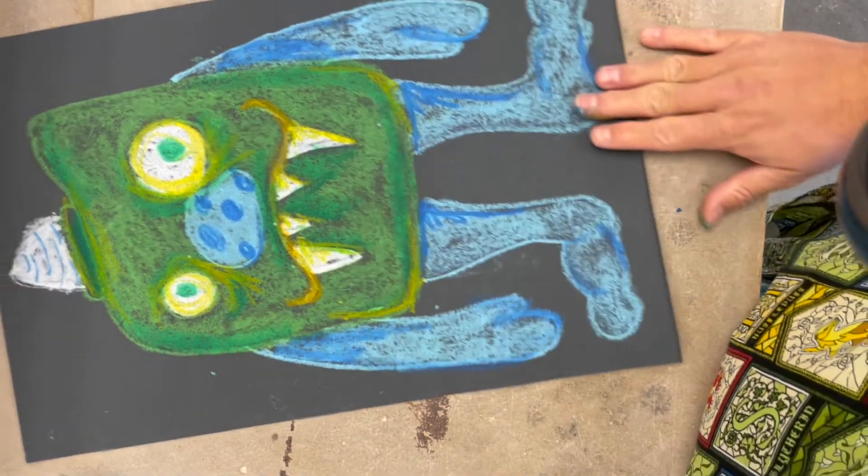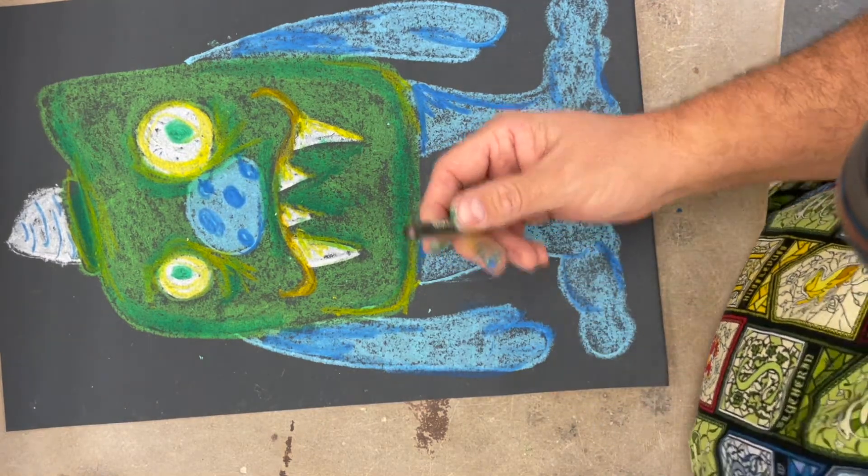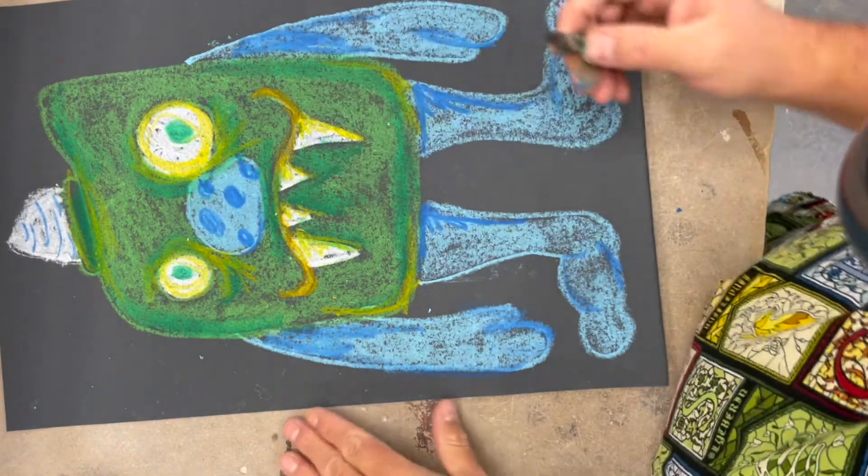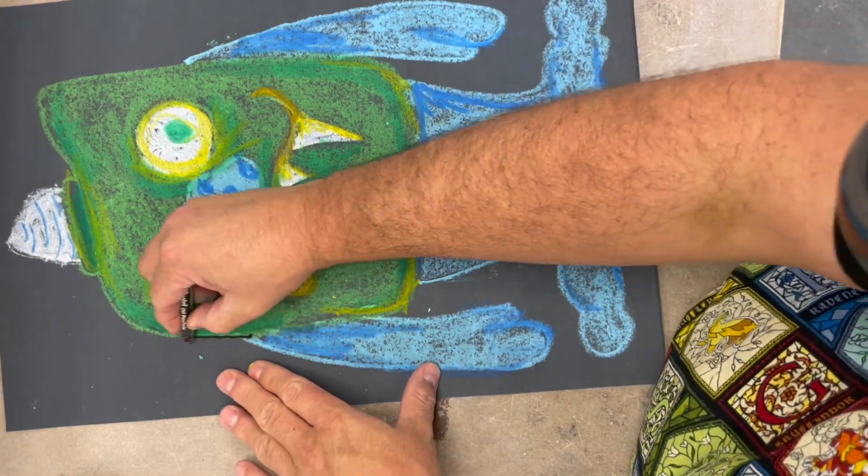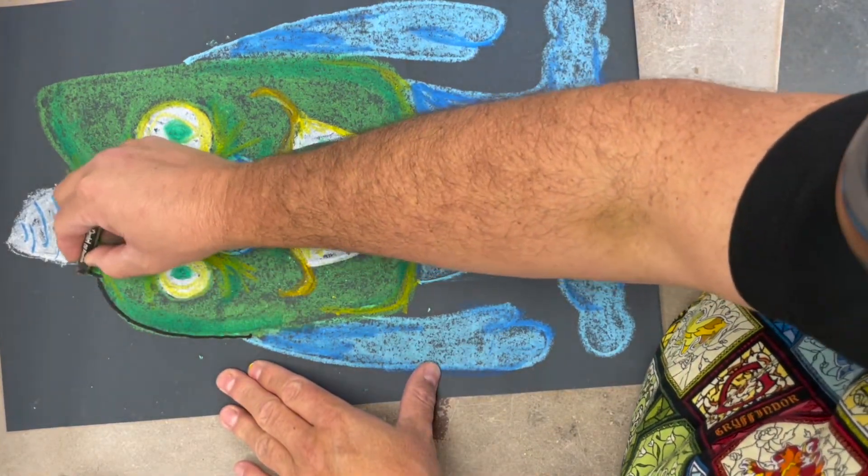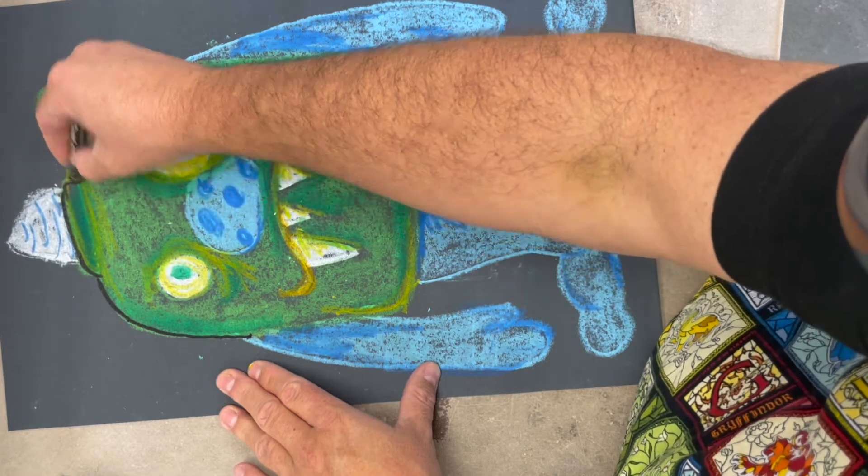I've gone through and I've colored him all in. Now I'm going to take a black, and I don't color with black because I'm on black paper, but I can go back in with the black and I can outline that original drawing again.